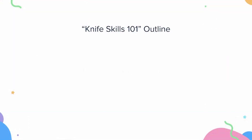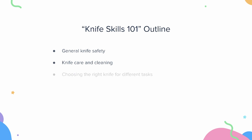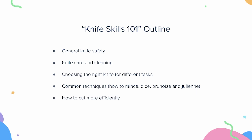What does that take? First, it's going to take learning some general knife safety so you don't get hurt. It's probably going to take some learning about knife care and cleaning so you can keep your knives sharp. It'll probably take a lesson on choosing the right knife for different tasks so that when you see a recipe, you know what to do. And you'll probably need to know some common techniques like mincing, dicing, brunoise, and julienne. You might need to know how to cut more efficiently — going a little bit faster after you know the different cuts. And you might need some next steps to level up even further after you get through these other modules.